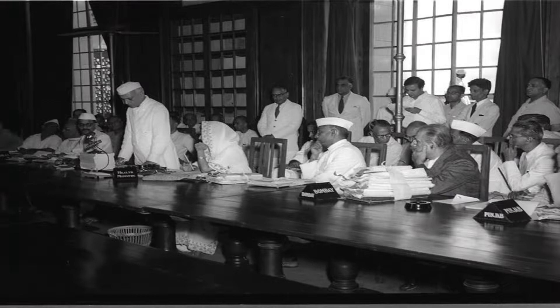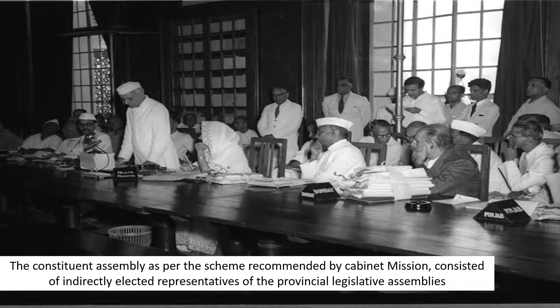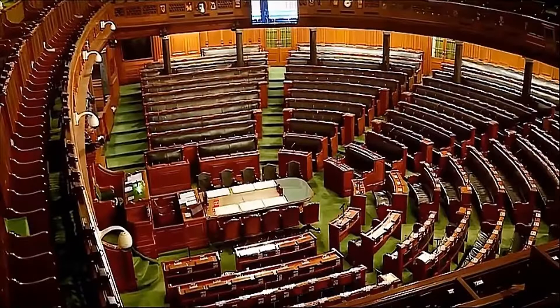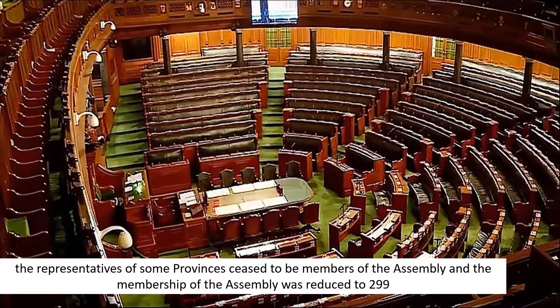The constituent assembly, as per the scheme recommended by the cabinet mission, consisted of indirectly elected representatives of the provisional legislative assemblies. Initially total membership of the assembly was 389, out of which 292 members were elected through the provincial legislative assemblies, 93 members represented the Indian princely states, and 4 members represented the chief commissioners provinces. Due to the partition under the Mountbatten plan of 3rd June 1947, the membership was reduced to 299.